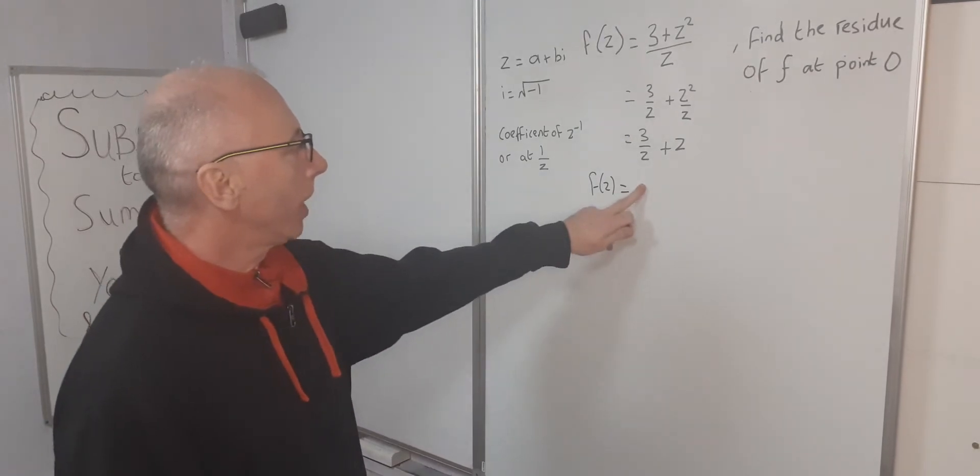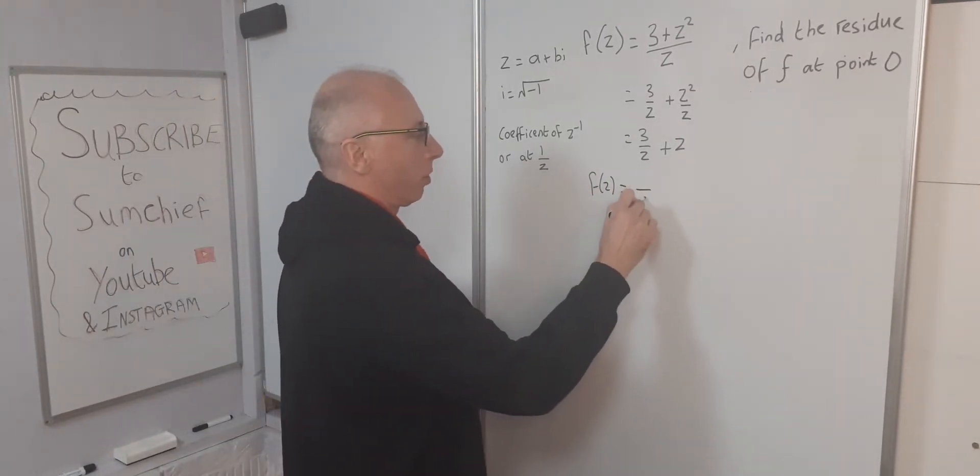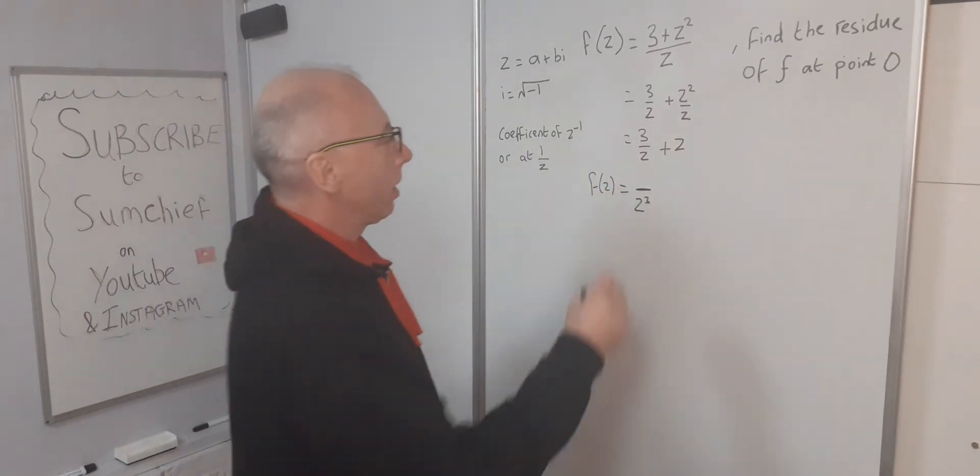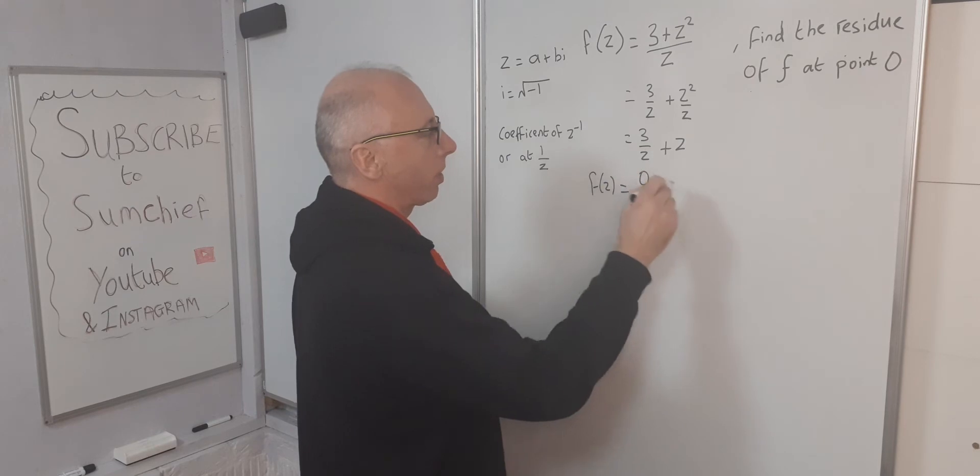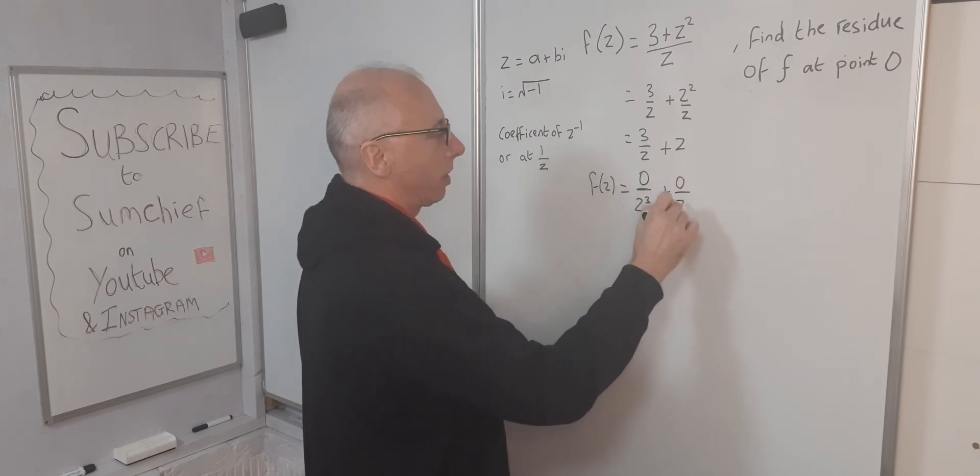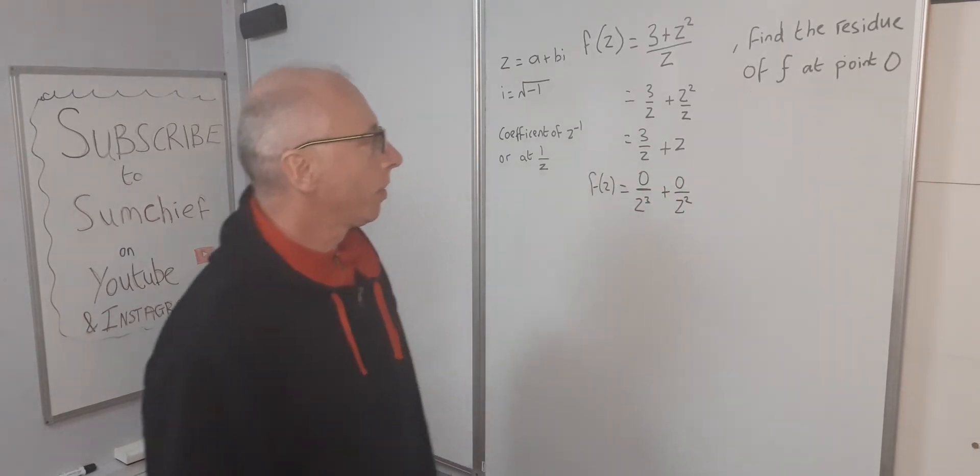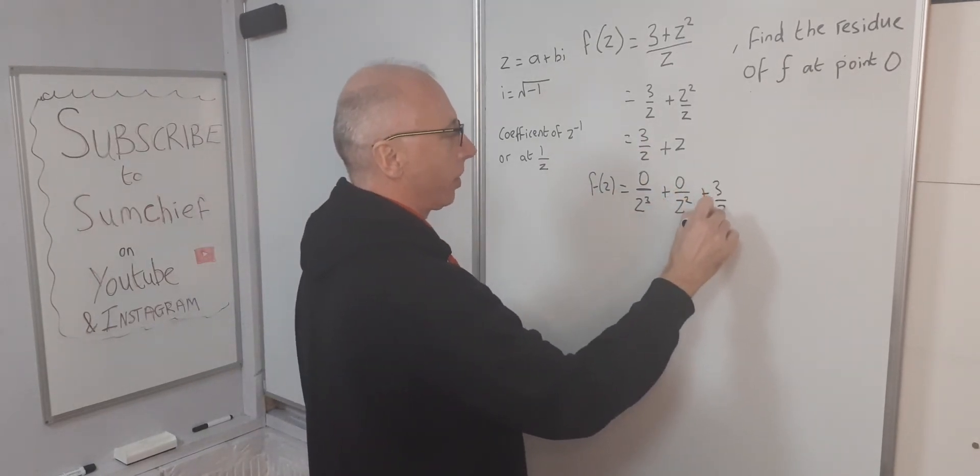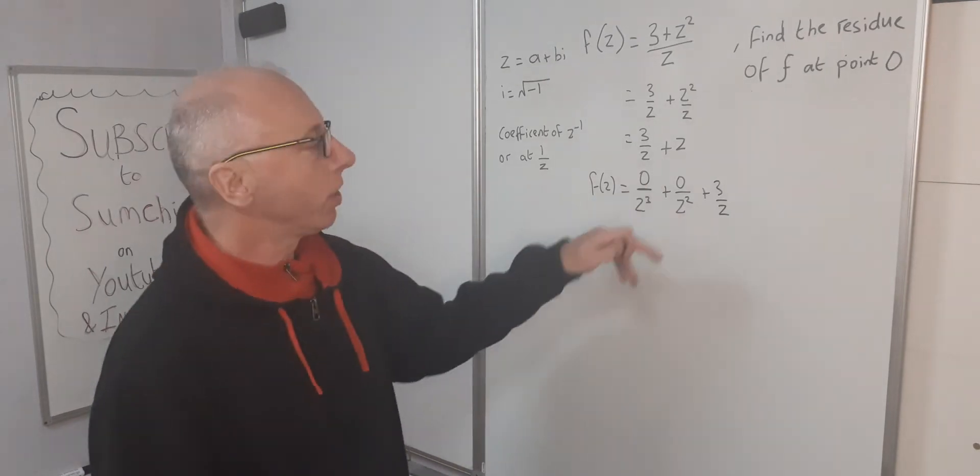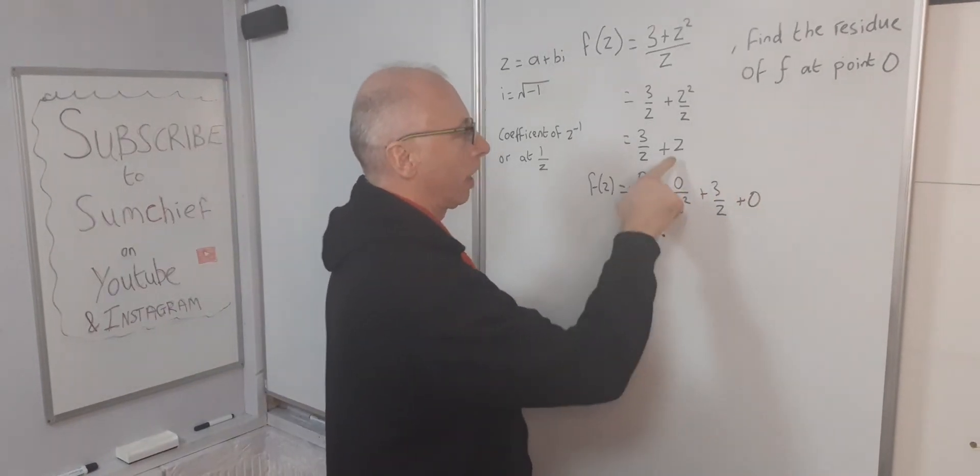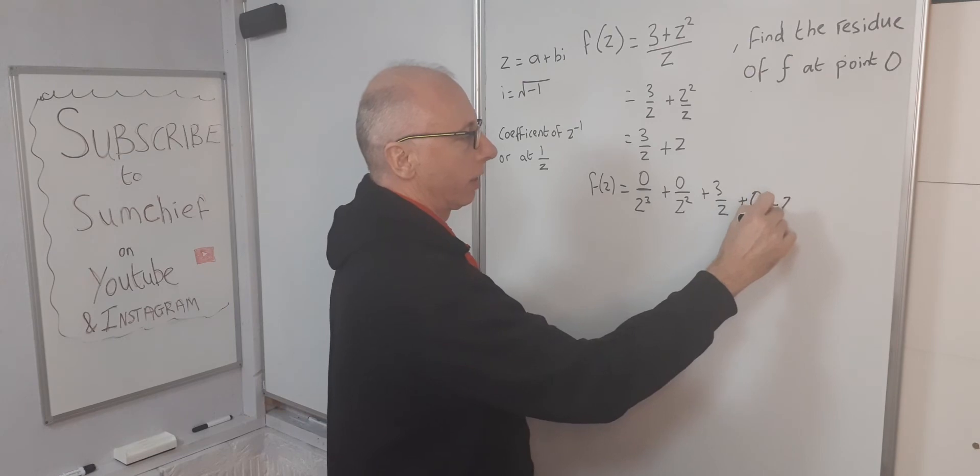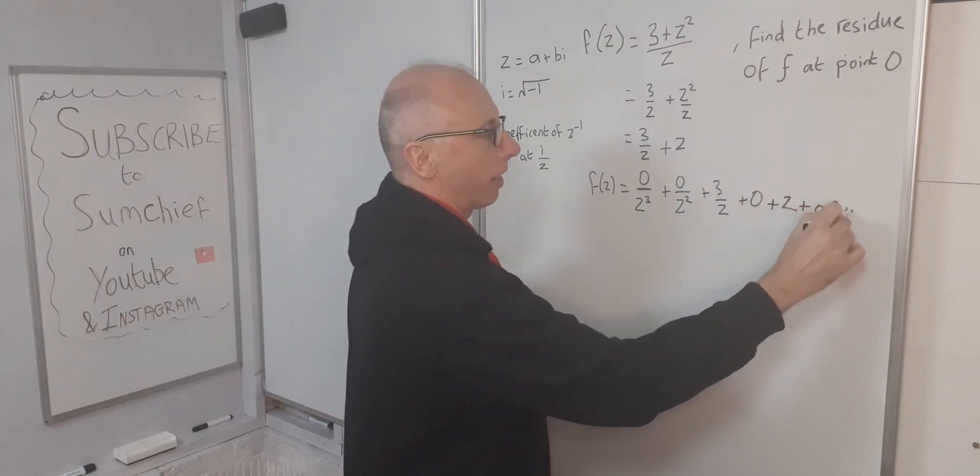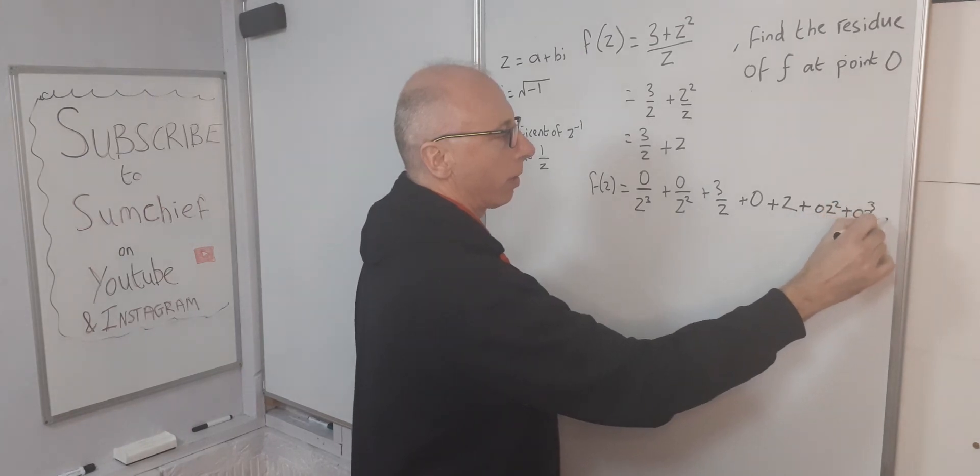Let's start from z^(-3). There's nothing for z^(-3), so that's 0. For z^(-2), there's nothing there. We've got 3/z, so we say +3/z. There's no constant term, so +0. We've got z. Then for z², there's no z², and so on.